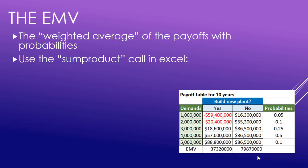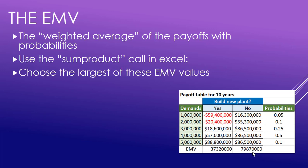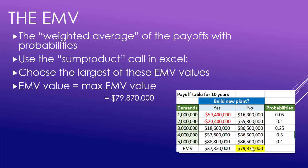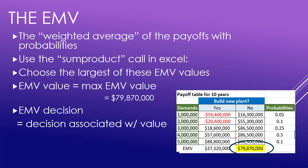The SUMPRODUCT gives us the following EMVs, and then we take the largest of these — the 79 million is the largest. That is our EMV value, and the decision related to that value is no. EMV value: 79 million; EMV decision: no.